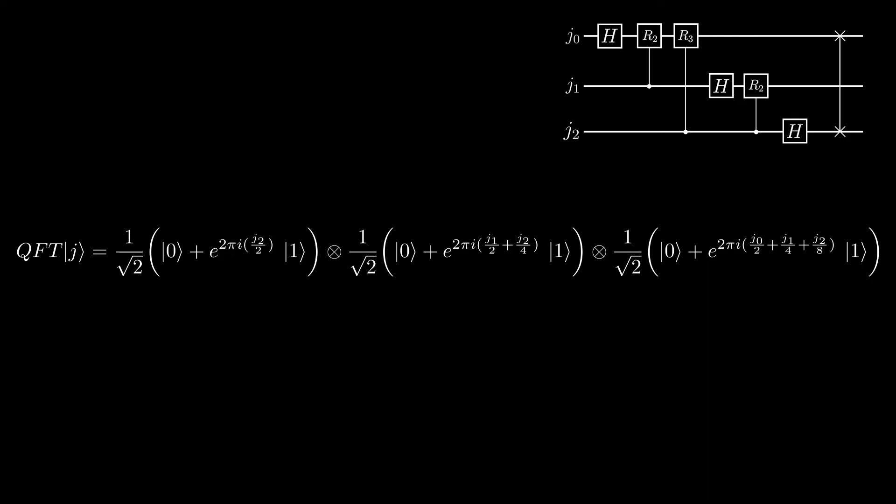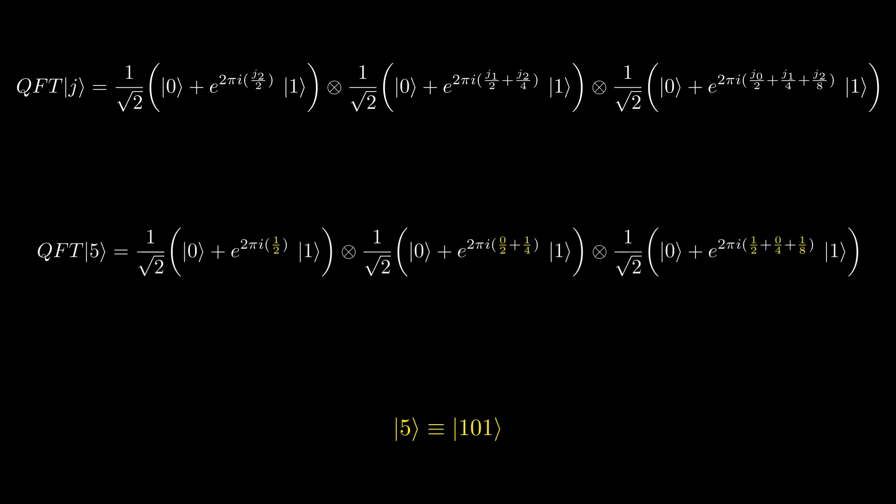It may not seem like we did much, but we have in fact encoded the value of j into the phase of the qubits, just like we saw with the animation previously. Let's quickly check this by making j the value of 5, so 101 in binary. If we now input the values into the equations for the state, then we can see that the phases do match up to what we had previously discovered at the beginning of the lesson.